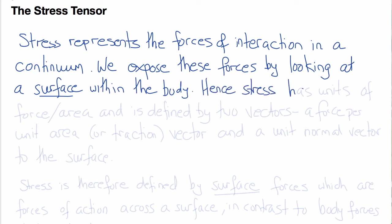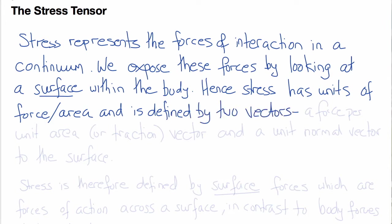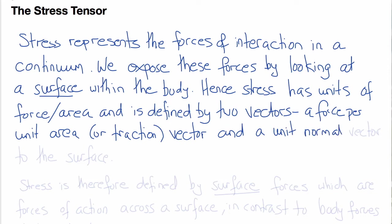Because of this, stress has units of force per unit area. Being a tensor — a rank 2 tensor — it's defined by two vectors. One of them is that force per unit area vector, or traction vector. The other is the unit normal vector to the surface that defines the orientation of the surface at that point.